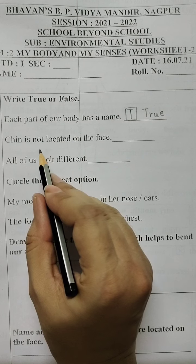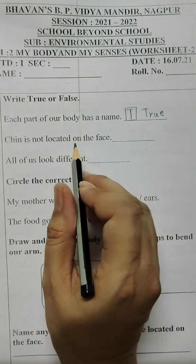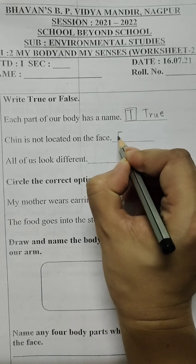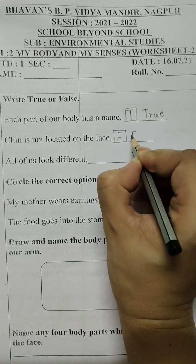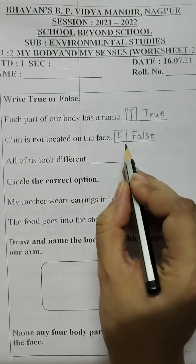Then students, chin is not located on the face. It is absolutely false because it is located on the face. I told you that it is situated between your mouth and neck. So it is absolutely false.